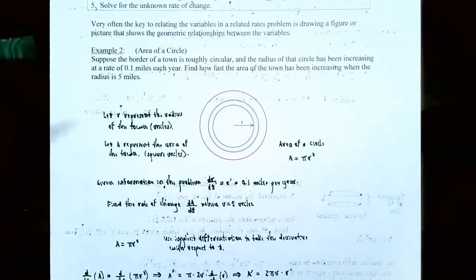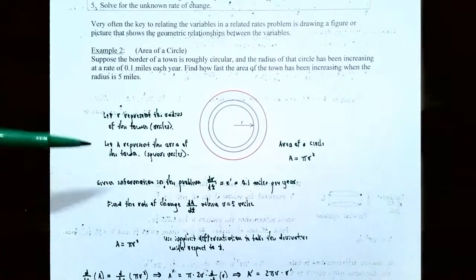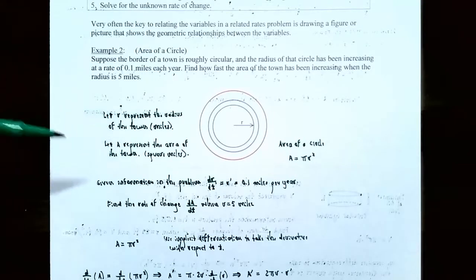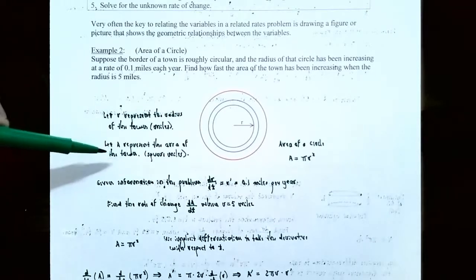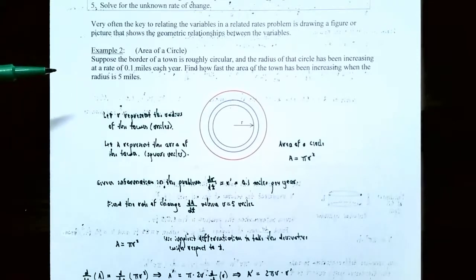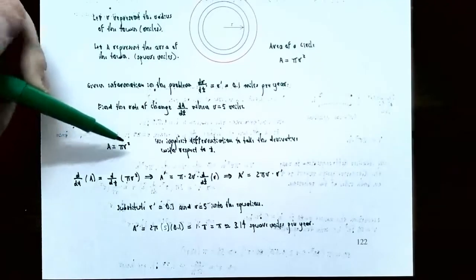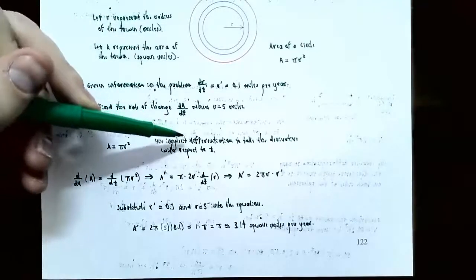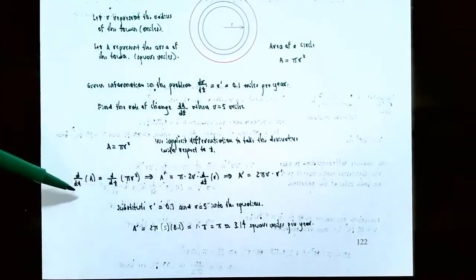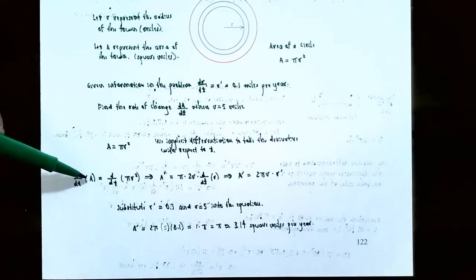Step three: differentiate A equals pi r squared with respect to time t. Keep in mind that A is a function of time and r is a function of time. Anytime you take the derivative of r, multiply by r prime using the chain rule, and same for A. The derivative of A is A prime, and the derivative of pi r squared gives 2 times pi times r times r prime.